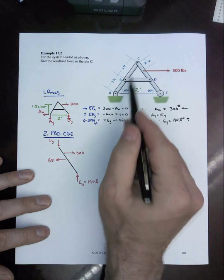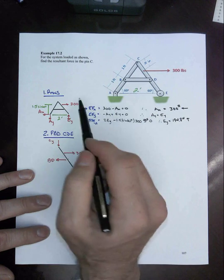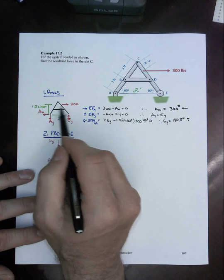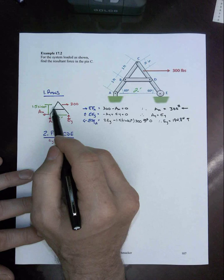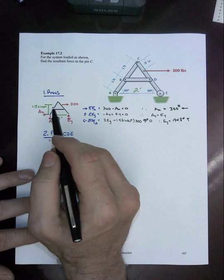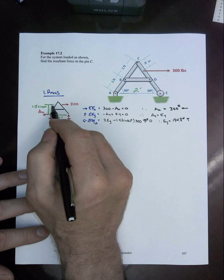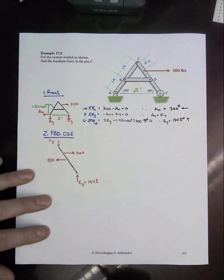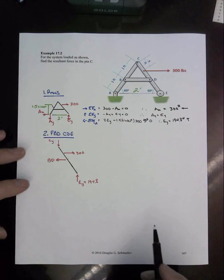Then we go along and find out that EY is 194.8. Note that we've got an equilateral triangle here of two foot on each side, so that moment arm for the 300 is this one and a half hypotenuse times sine of 60. There's your 60 degrees in that little angle right.